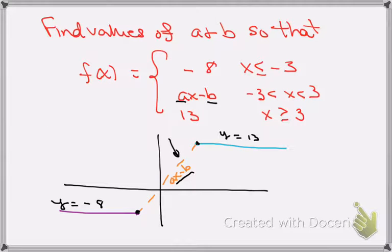If we look back at our picture, if we're approaching from the left, the function is minus 8, so we need to consider that limit. At this point, when we're approaching from the right, the function is equal to ax minus b.